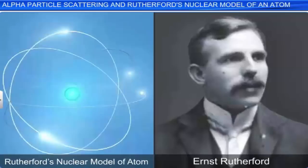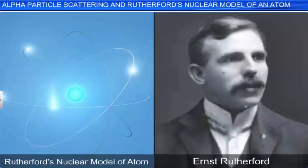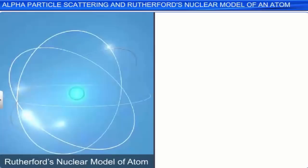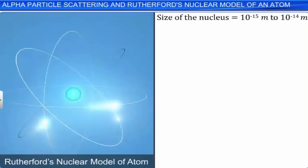Based on Rutherford's experiments, the size of the nucleus was estimated to be around 10⁻¹⁵ meter to 10⁻¹⁴ meter. According to the kinetic theory of gases, the size of the atom is about 10⁻¹⁰ meter. So, the atom is about 10,000 to 100,000 times larger than its nucleus.